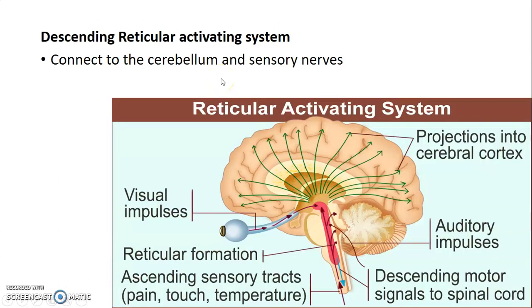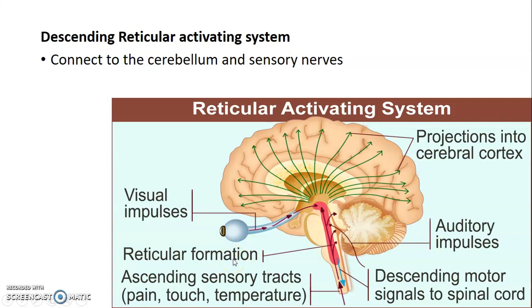We also have the descending reticular activating system, which connects the brainstem to sensory nerves below and also to the cerebellum. Fibers go to the cerebellum and downwards to the sensory nerves of the spinal cord, and others communicate with visual sensory impulses.